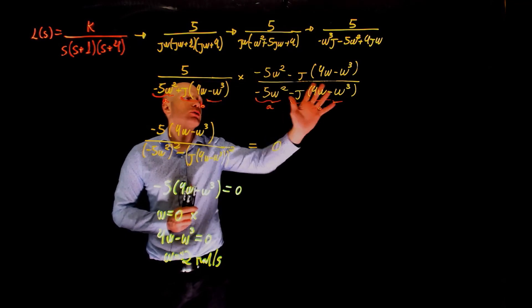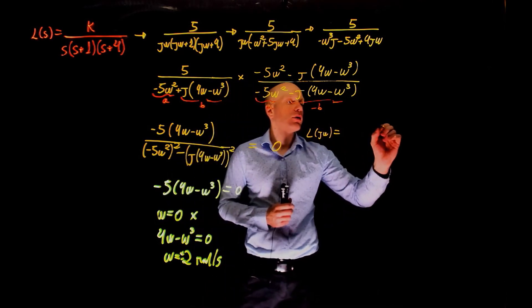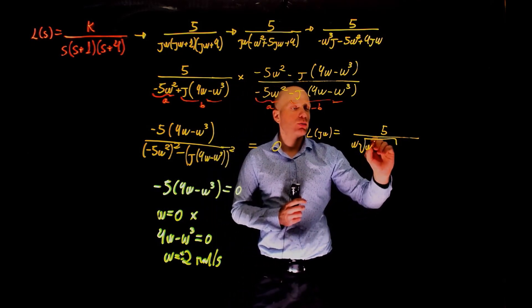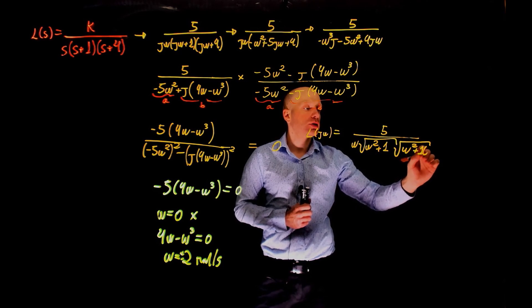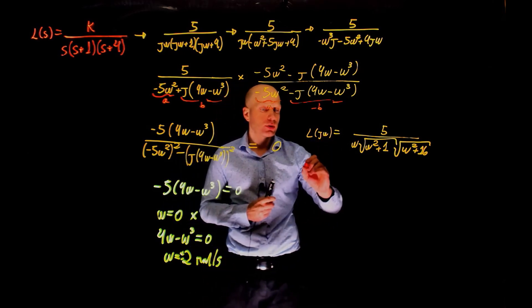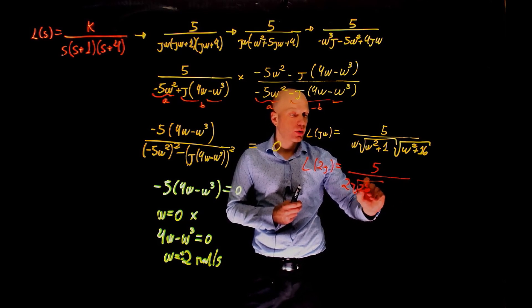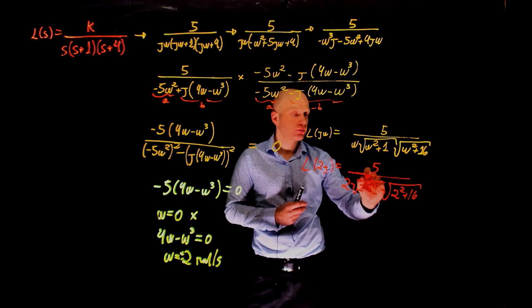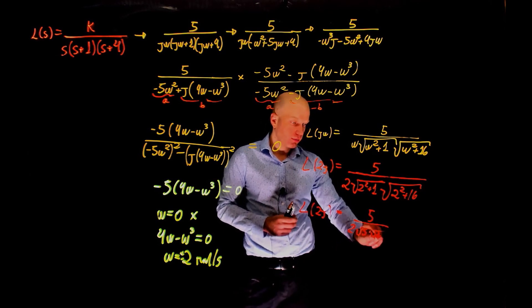At that frequency, the imaginary part of the transfer function becomes zero. We can now calculate the magnitude of L(j omega). The magnitude is 5 divided by omega times the magnitude of (j omega plus 1), which is square root of (omega squared plus 1), and the magnitude of (j omega plus 4), which is square root of (omega squared plus 16). Evaluating at omega equals 2: the magnitude is 5 over 2 times square root of 5 times square root of 20.